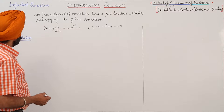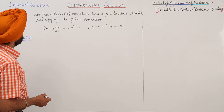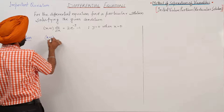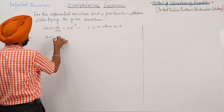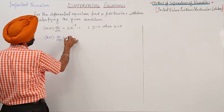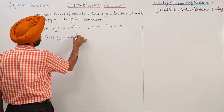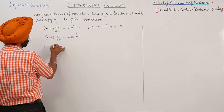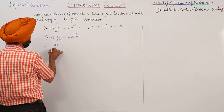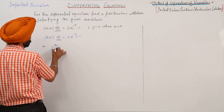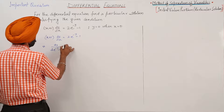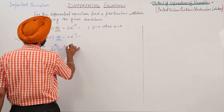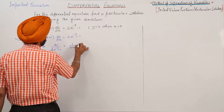The question is: (x + 1) dy/dx is equal to 2e^(-y) minus 1. To solve this, we can separate variables and write dy upon (2e^(-y) minus 1) is equal to dx upon (x + 1).